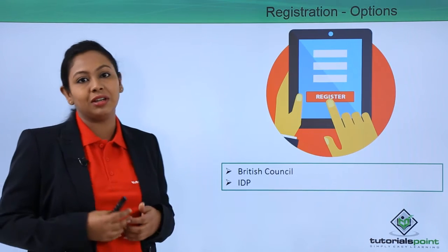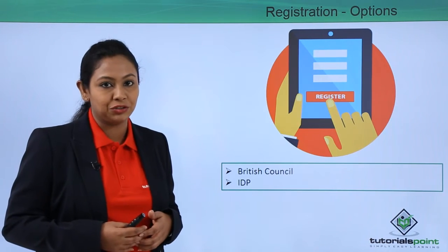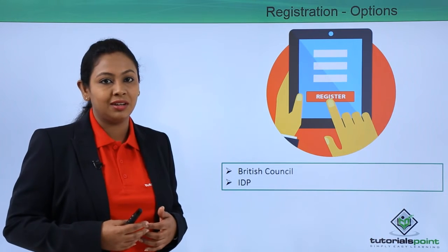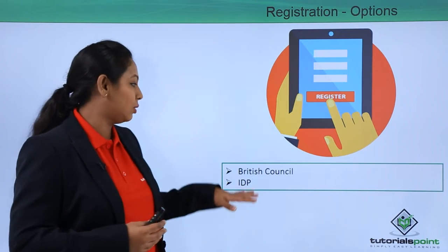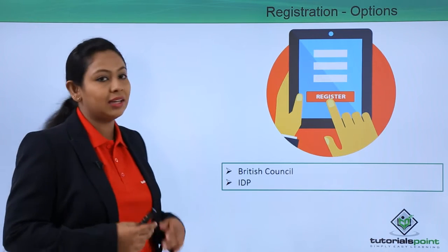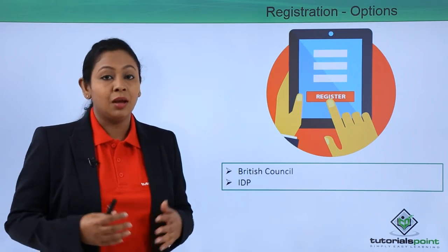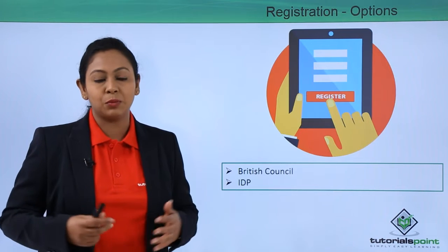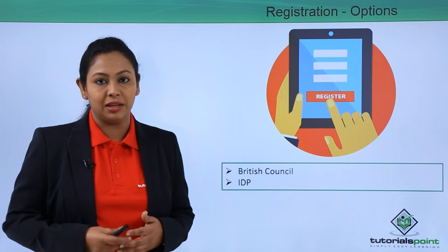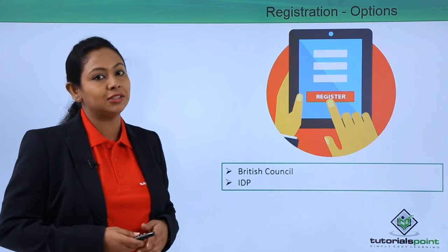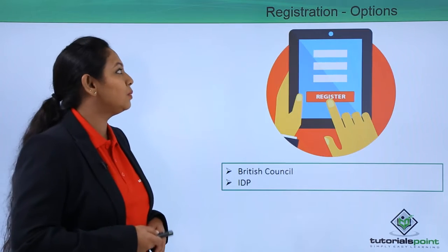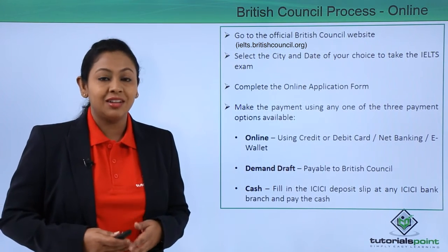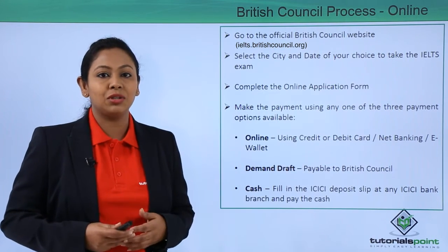Now let's have a look at the different options available for registration. You have two options: one is through the British Council and the second is through the IDP. Both these platforms have different processes, so let's begin with the British Council online procedure.